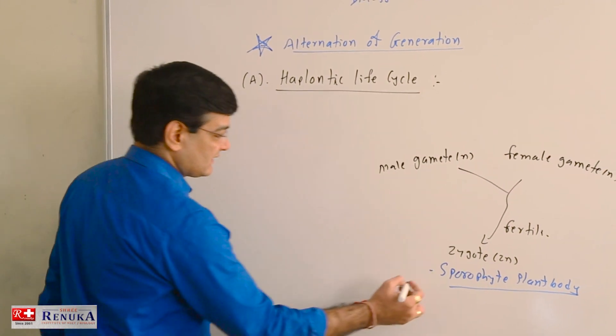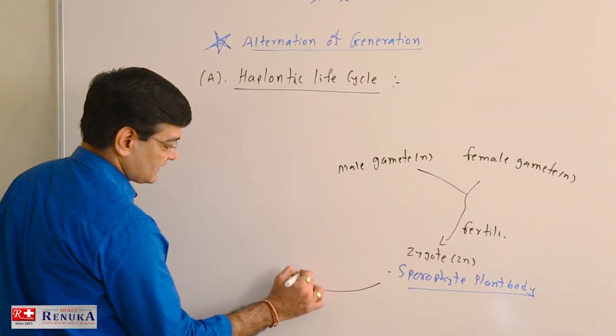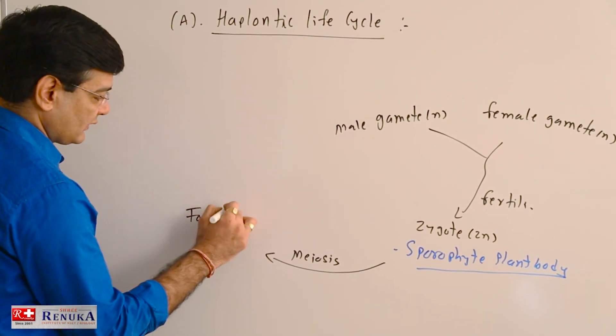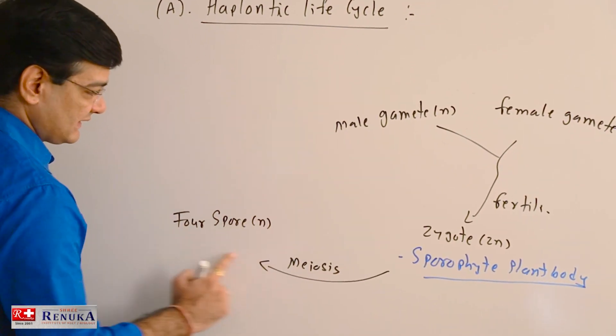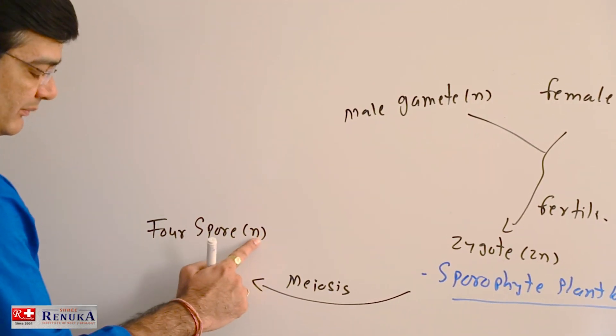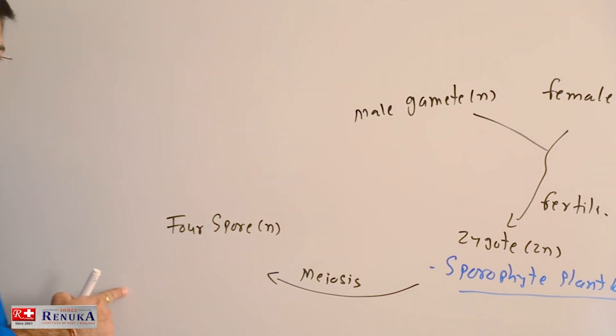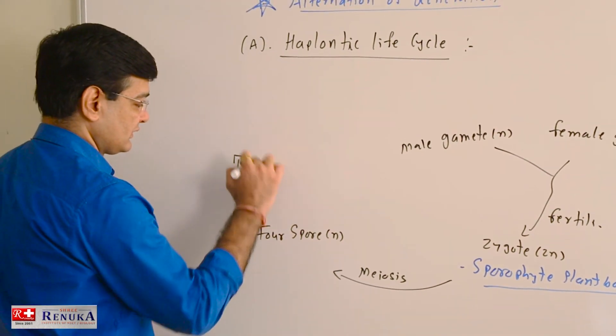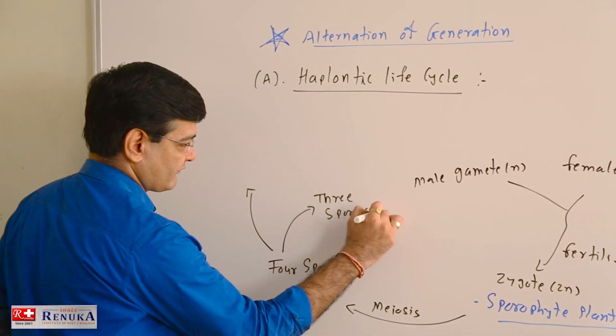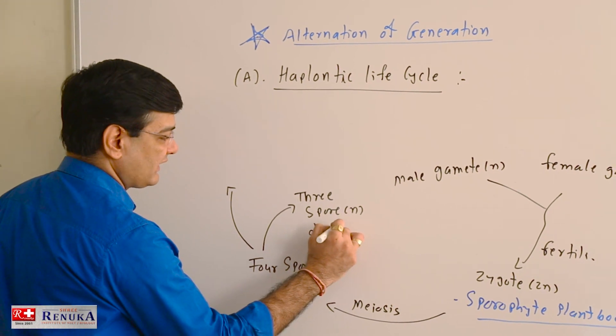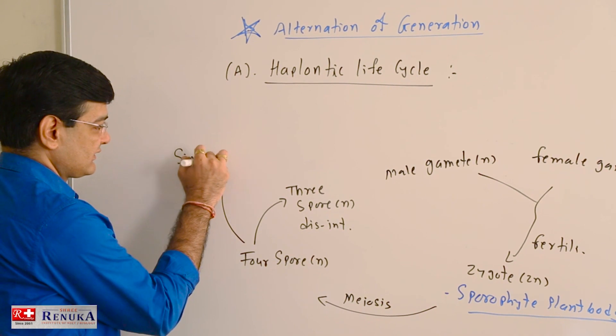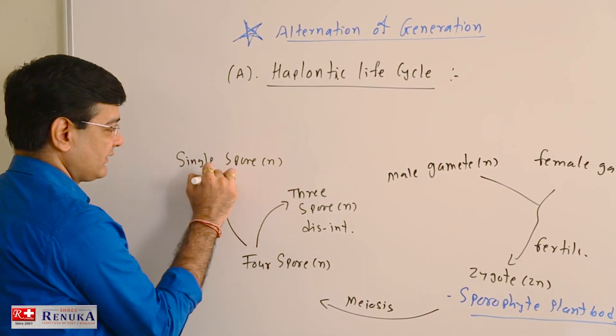After some time, this zygote undergoes meiosis to form four spores. Obviously, as diploid cell undergoes meiosis to form four cells, the cells are haploid, and these are the haploid spores. From this haploid spore, three spores disintegrate or degenerate, and a single spore which is haploid remains active.